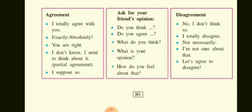When we look at this, we have three tables. Agreement phrases: 'I totally agree with you,' 'Exactly,' 'Absolutely,' 'You are right,' 'I don't know, I need to think about it.' Partial agreement: 'I suppose so.' You can ask for your friend's opinion: 'Do you think...?' 'Do you agree with it?' 'What do you think?' 'What is your opinion?' 'How do you feel about that?' Disagreement phrases: 'No, I don't think so,' 'I totally disagree,' 'Not necessarily,' 'I am not sure about that,' 'Let's agree to disagree.' Children, this is what we are supposed to keep in mind when we interact with our friends or when we are discussing something.